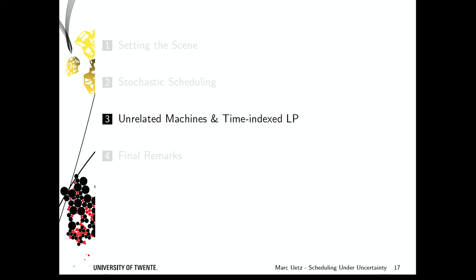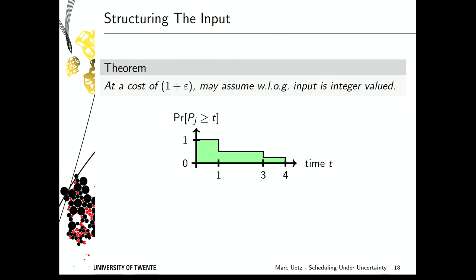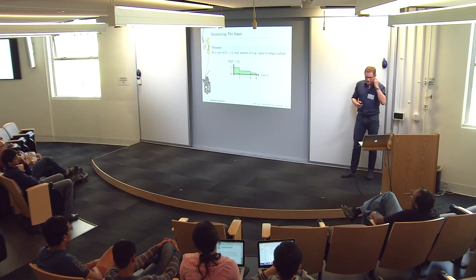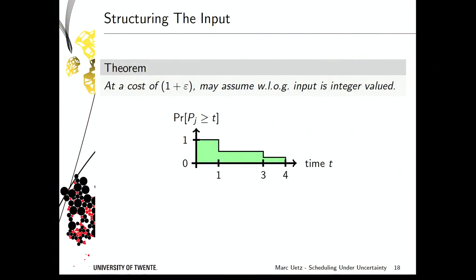Let me turn to unrelated machine scheduling and the recent results we obtained. The setting is unrelated machines with arbitrary processing time distributions on different machines. The first observation is that it is essentially no loss of generality to assume discrete integer-valued distributions: for a continuous variable, shift all probability to the next highest integer point; standard scaling handles the rest, at a cost of 1 + ε.